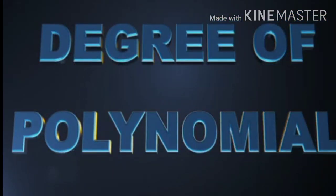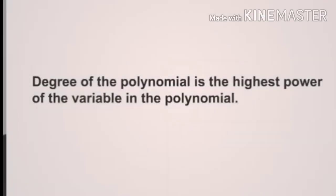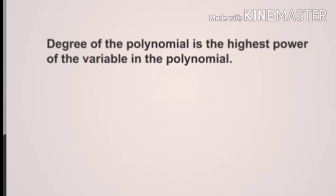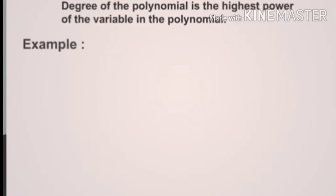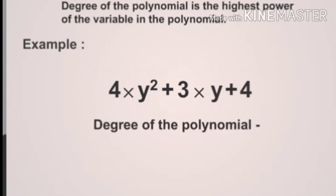Degree of polynomial. This module explains how to find the degree of a polynomial. The degree can be found by taking the highest power out of all the terms in the given polynomial. Example a: 4y² + 3y + 4. The degree of the given polynomial is 2.